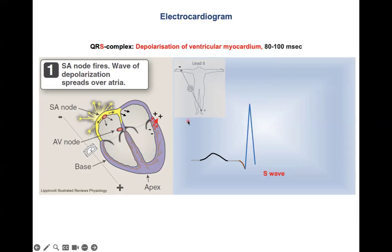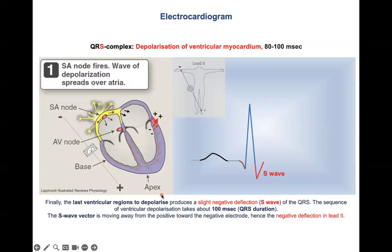Then we have the last regions of the ventricles to depolarize, indicated by the red vector. It moves from the plus electrode to the minus electrode, giving a negative deflection. This is the S wave — a small deflection, because very few cells are involved compared to the large left ventricular mass.